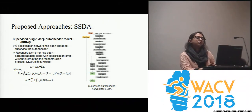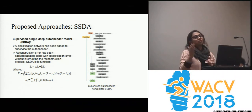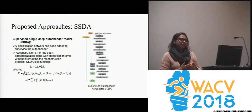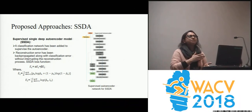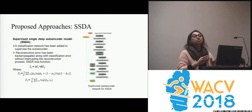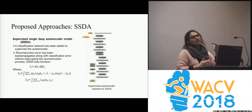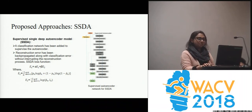In the supervised approach, after the normal encoder layers, we have added a classification network to guide the autoencoder with label information. Since our data is incomplete and partial, this label information guides the network to structure the features to facilitate 3D model retrieval. The loss function is a combination of sigmoid cross-entropy and softmax loss with hyperparameters alpha and beta.